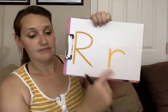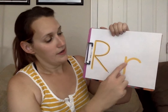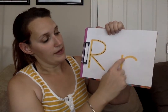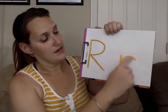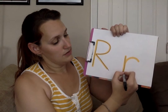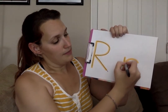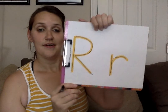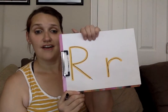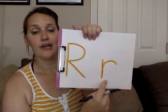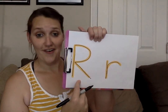Next I'm going to trace my lowercase r. I'm going to go big line down, go back up, and dive over. Ready? Little line down, go back up, and dive over. And remember, we made the letter R. Our capital R and our lowercase r. Nice job everyone.